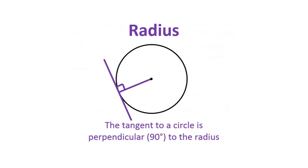The tangent to a circle is perpendicular to the radius.